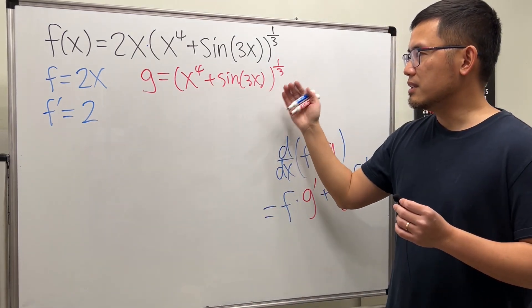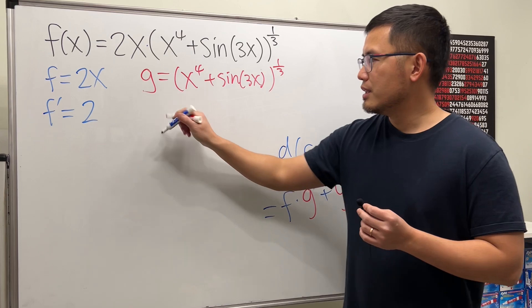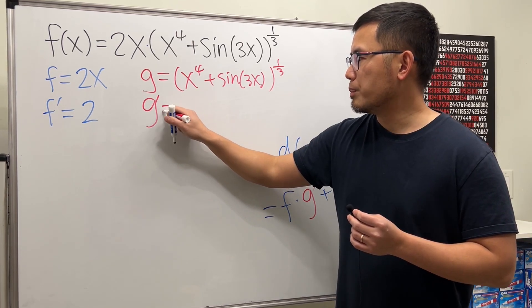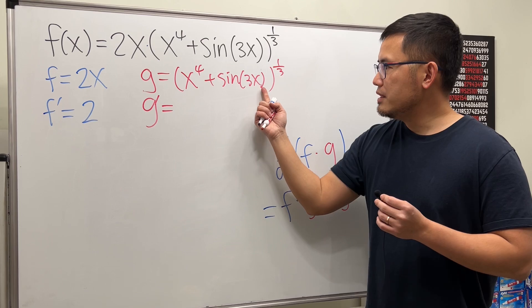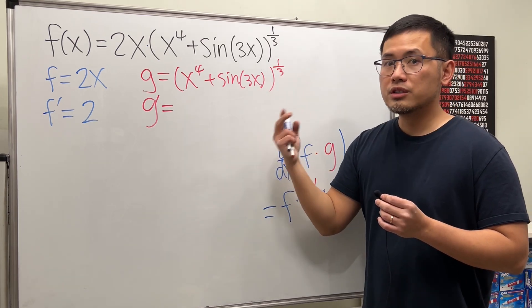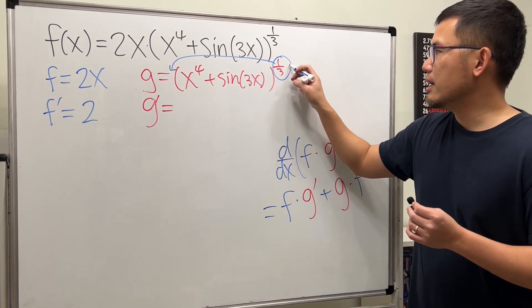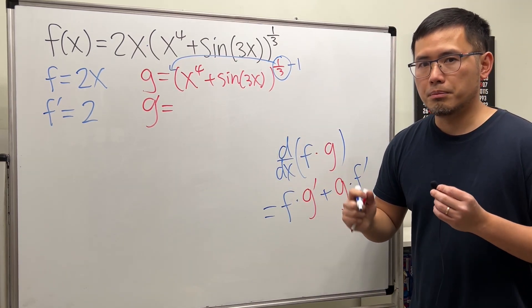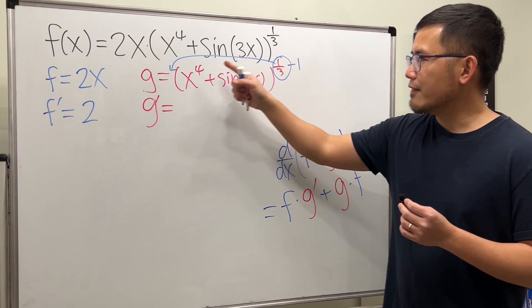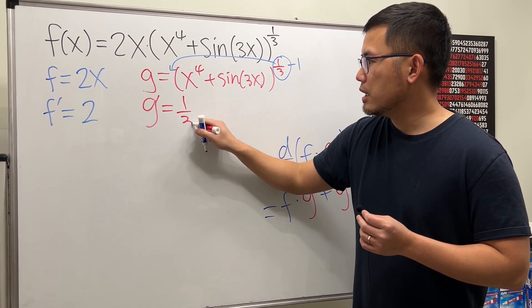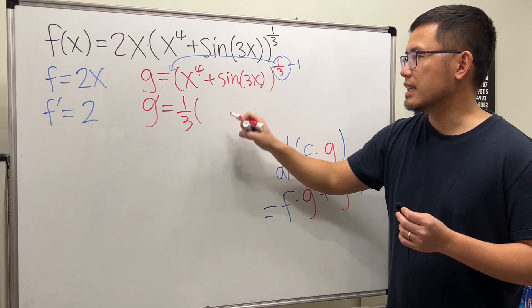Then we look at this and take the derivative. g prime, that will be equal to, we have this to the one third power. So let's go ahead, bring the power to the front, and then minus 1 because of the power rule. We have one third in the front. And then remember, for all this right here, it will stay inside.